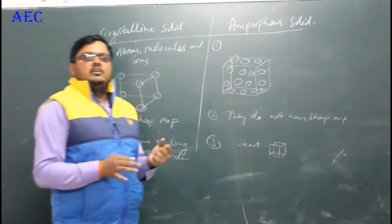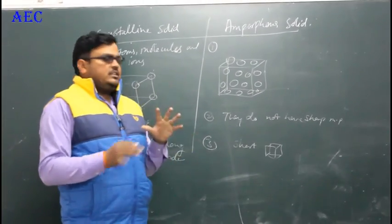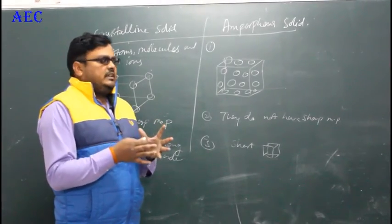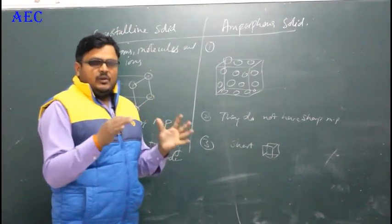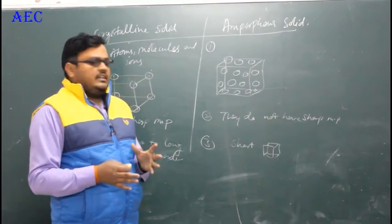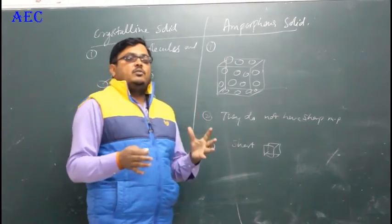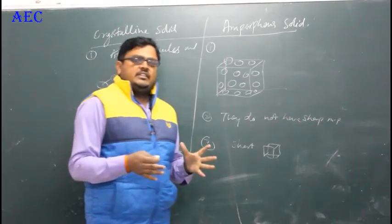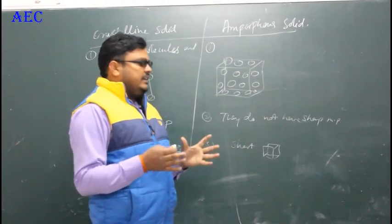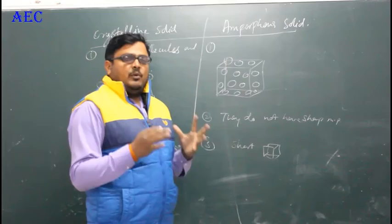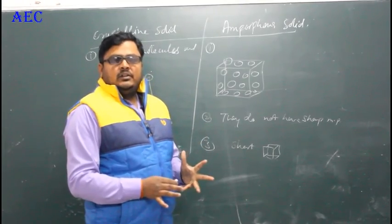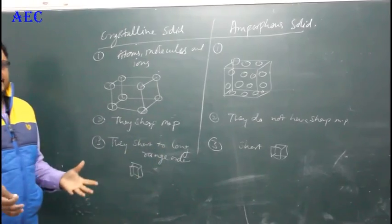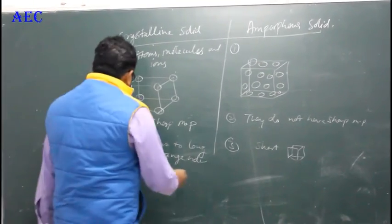For example, take wood, which is amorphous. If a small piece of wood is cut in a regular pattern, it may look crystalline because it shows length, breadth, and height in a uniform way. But it is actually amorphous — in the long range, amorphous solids lose their identity and regular arrangement.